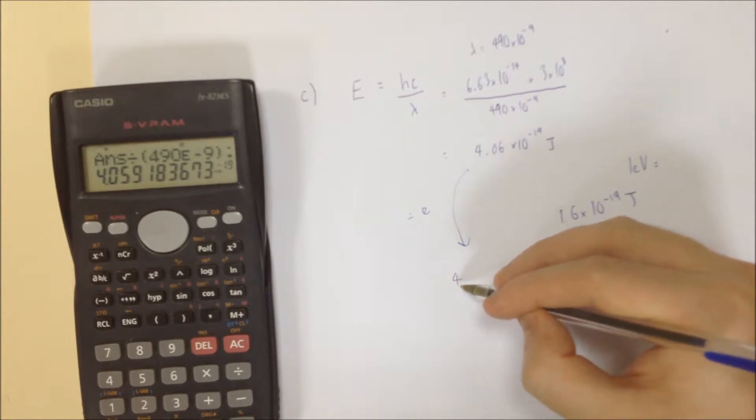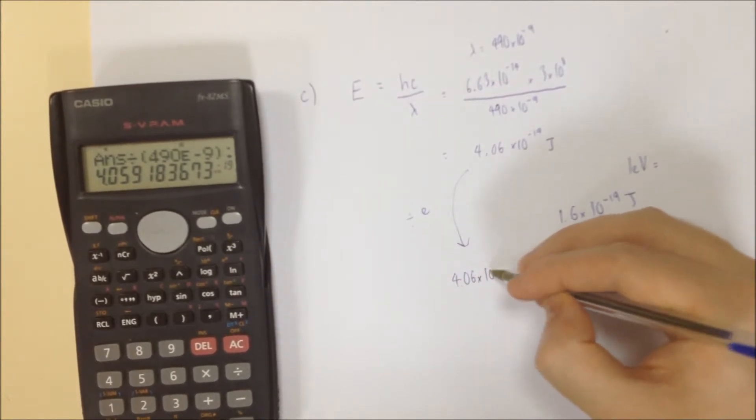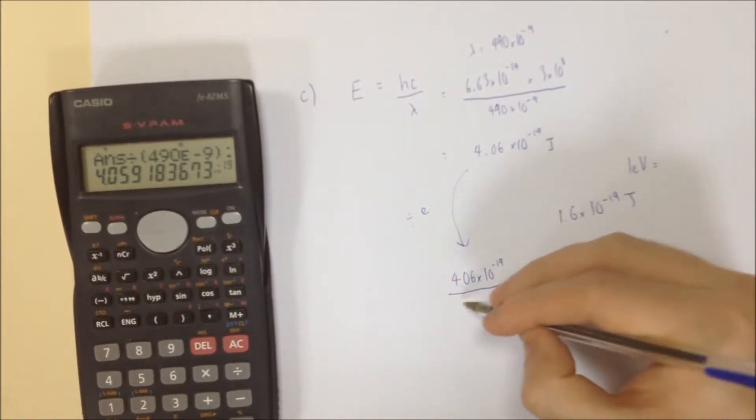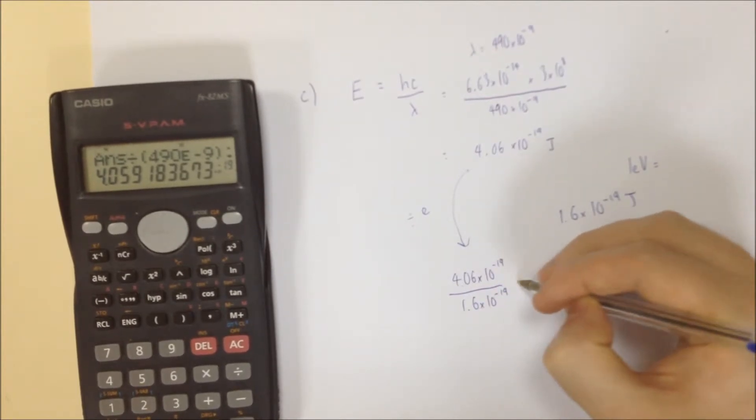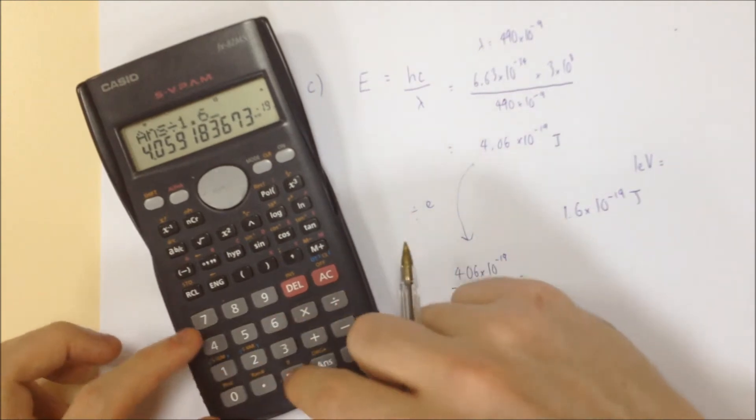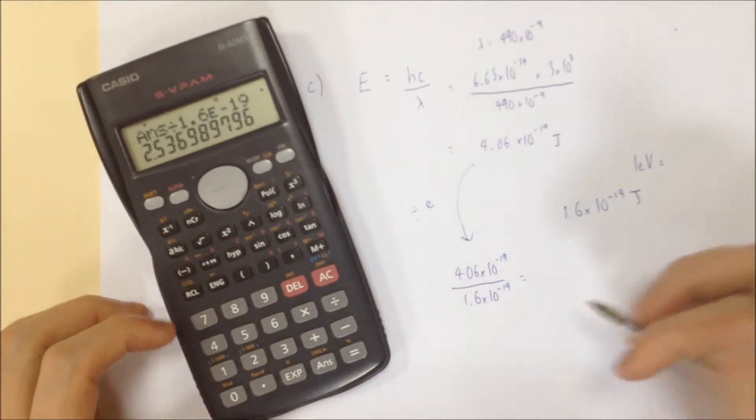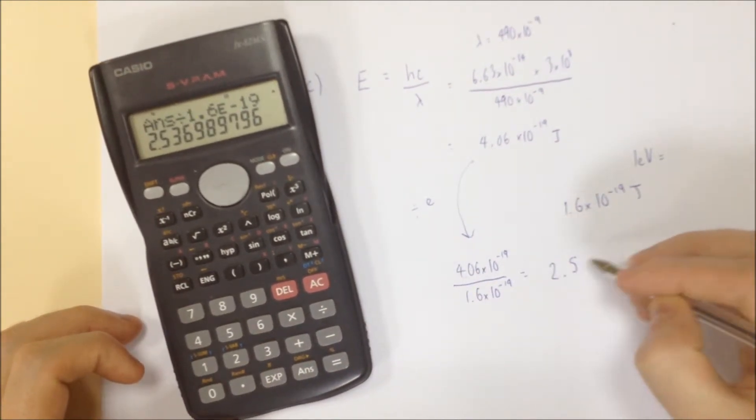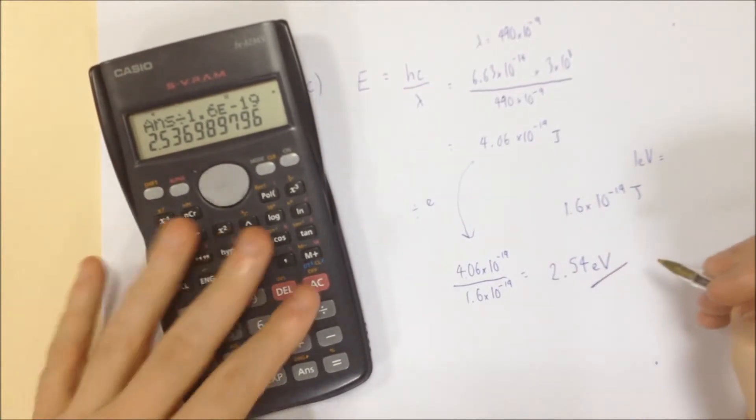we divide this number through by the charge on an electron. So 4.06 times 10 to the minus 19, divide by 1.6 times 10 to the minus 19. And you can see immediately that's going to give us a much more easy to use answer of 2.54 electron volts.